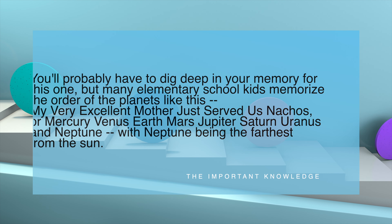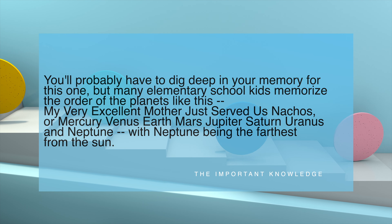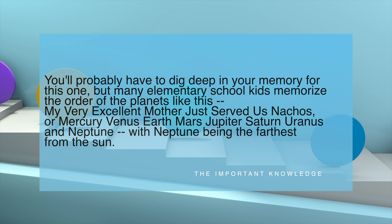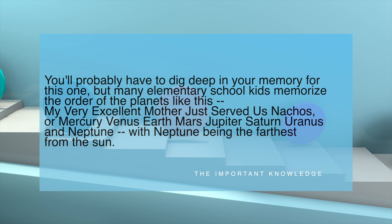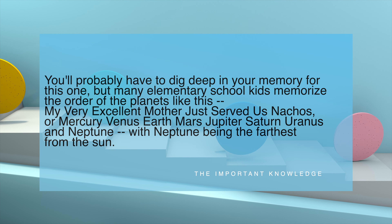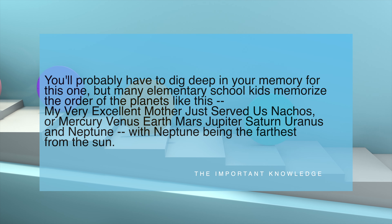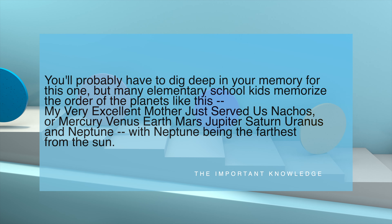You'll probably have to dig deep in your memory for this one, but many elementary school kids memorize the order of the planets like this: My Very Excellent Mother Just Served Us Nachos — Mercury, Venus, Earth, Mars, Jupiter, Saturn, Uranus, and Neptune — with Neptune being the farthest from the sun.